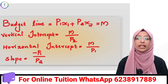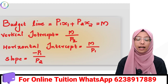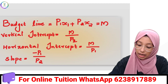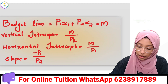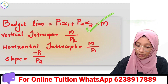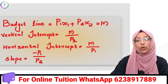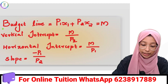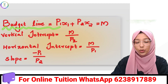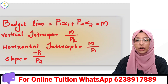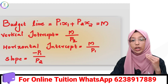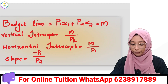We will learn about equations. The budget line equation is p1x1 plus p2x2 equal to m.